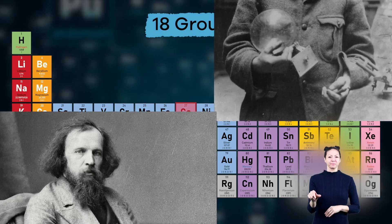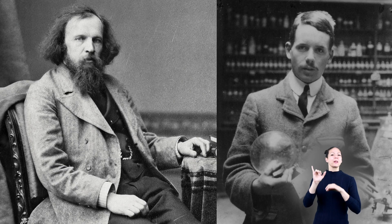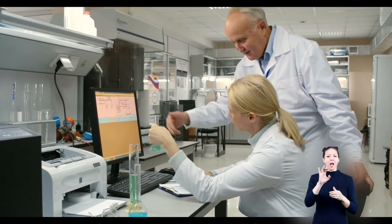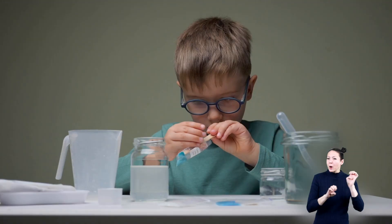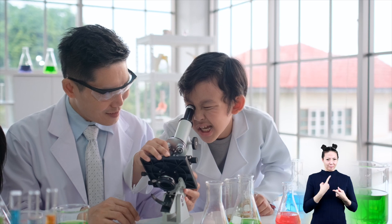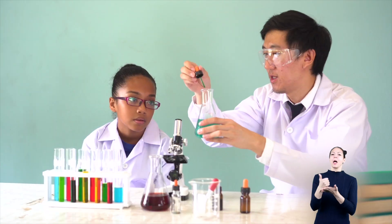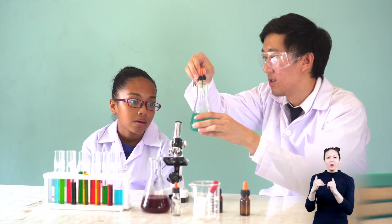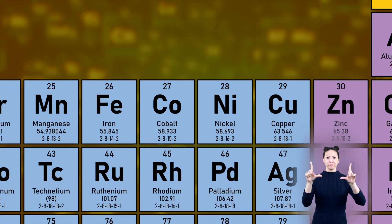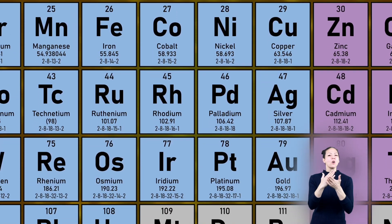Because of the work of chemists like Mendeleev and Mosley, scientists today have a guide to working with the elements when they do research and experiments. Even though we are not professional scientists, we can still use the periodic table to help us with all sorts of science-y stuff. Each element on the periodic table has several parts you can easily spot.